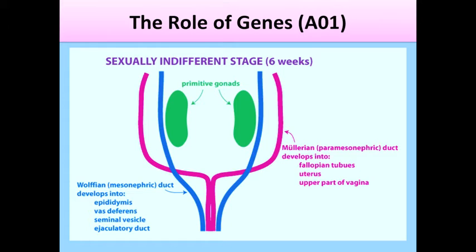The SRY gene on the Y chromosome, which only males possess, will cause the gonad — the organ which produces sex cells — to develop testes. A female's gonad will develop into ovaries due to the absence of the SRY gene.